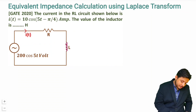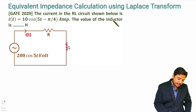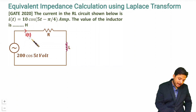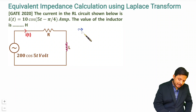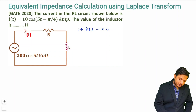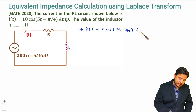In this question, the current in the RL circuit shown is I(t), and its value is given as 10 cos(φt − π/4) in amperes. The value of the inductor is what we need to find.